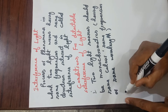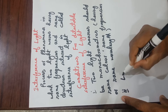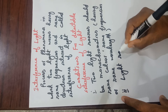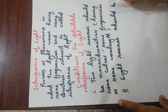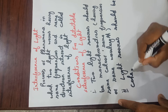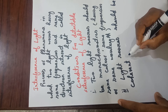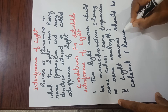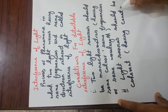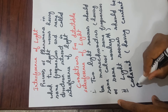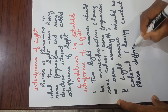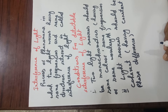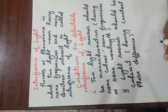The second condition is that light sources should be completely coherent. Coherent means having a constant phase difference. Waves which have a constant phase difference are called coherent sources or coherent light beams. These are the two basic conditions to produce detectable interference of light.